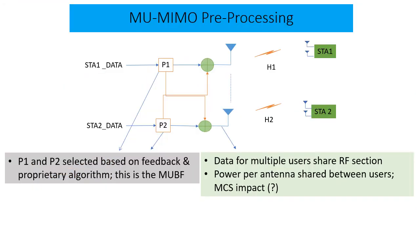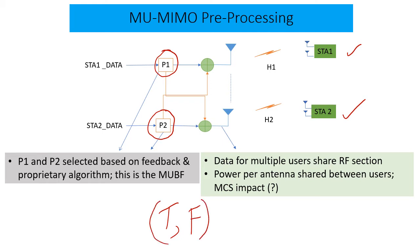What the AP does with the feedback is that at every sub-carrier, tone, or resource element, it figures out what pre-processing it should do — in this example for two users — such that we can use the same time and frequency resources. This is very important: same time and frequency resources are used, but with the right spatial processing we can get the separation effects as we saw previously.